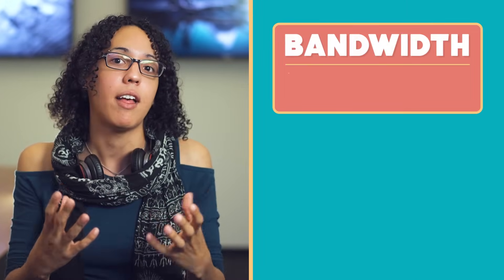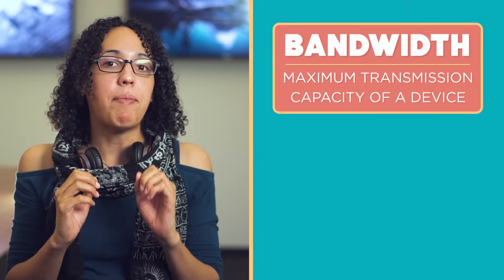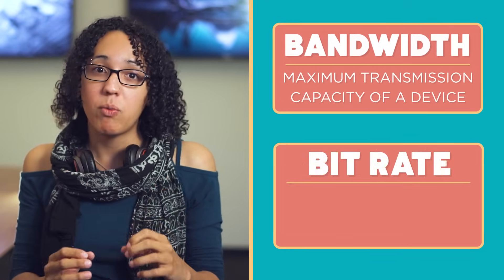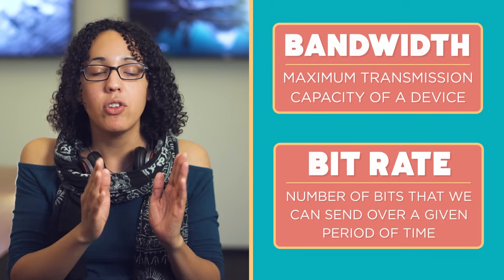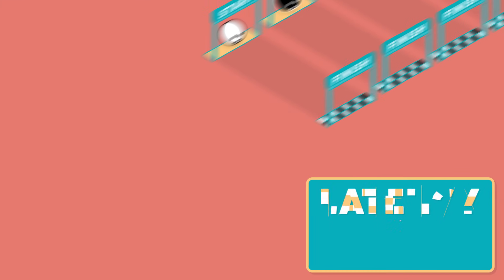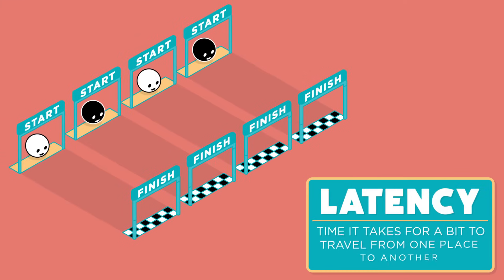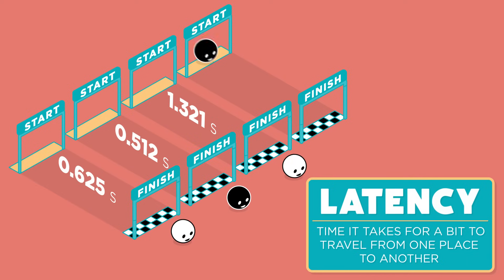Obviously, we'd like to send things faster than one bit per second, so we need to increase our bandwidth — the maximum transmission capacity of a device. Bandwidth is measured by bit rate, which is the number of bits we can actually send over a given period of time, usually measured in seconds. A different measure of speed is latency, or the amount of time it takes for one bit to travel from one place to another, from the source to the requesting device.